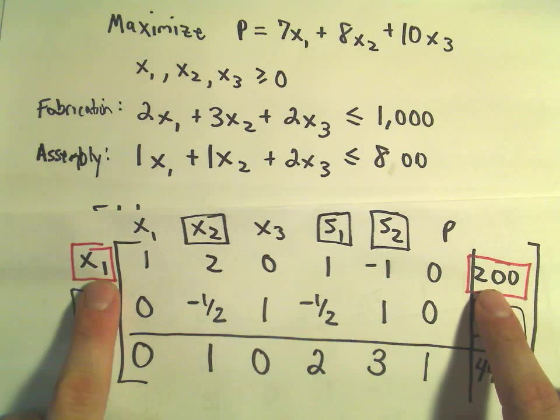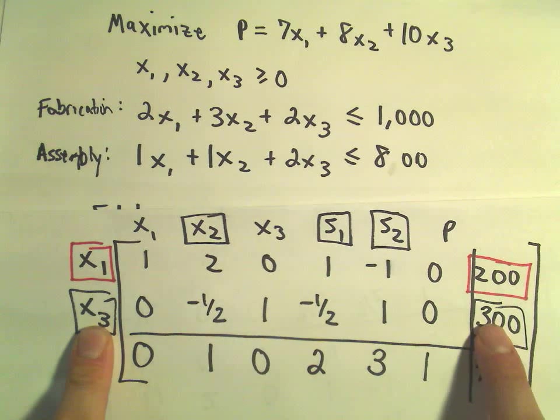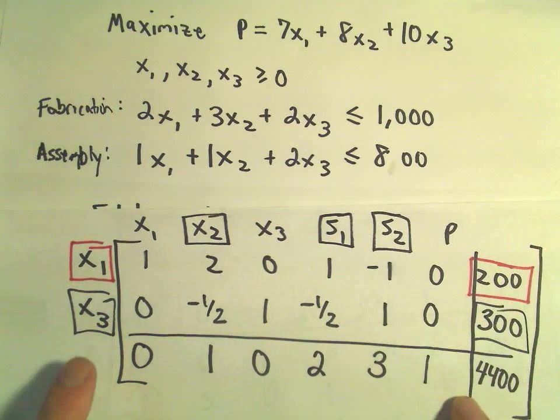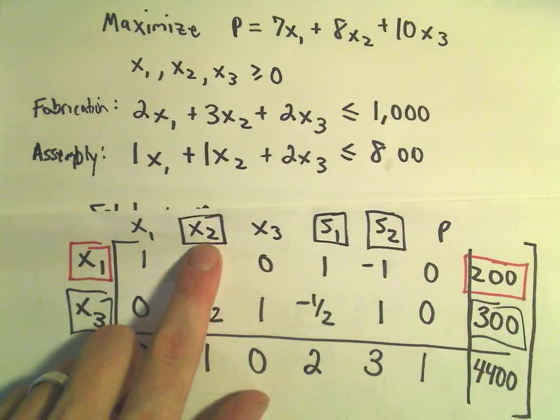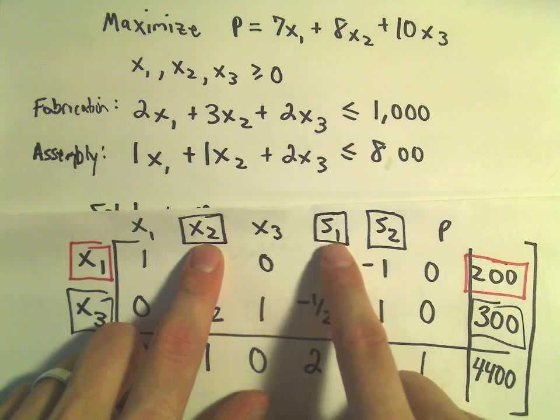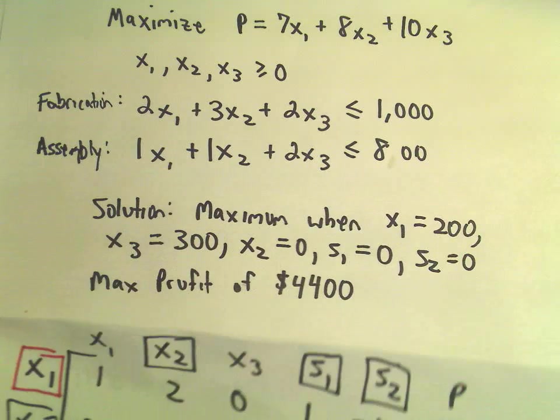We're going to get a maximum profit when x₁ equals 200 and x₃ equals 300. Your max profit is going to be the number down here in the bottom right corner. We set our other variables, which are x₂, s₁, and s₂, all equal to zero. Everything else just gets set equal to zero.